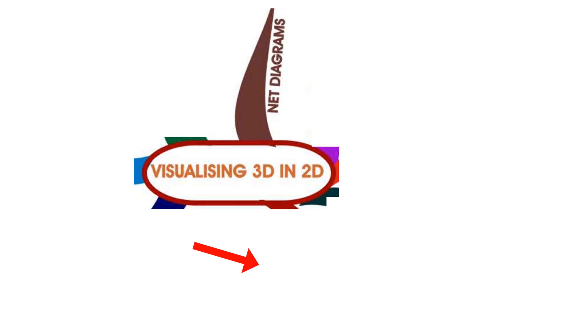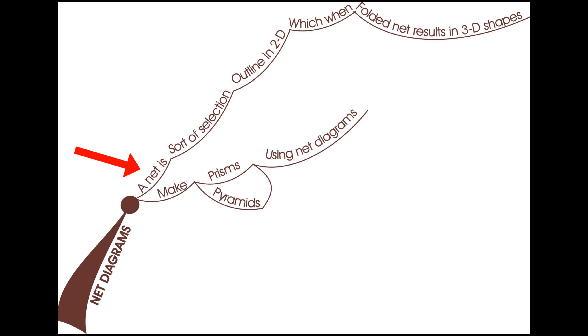Our eighth branch is about net diagrams. A net diagram is a sort of skeleton outlined in 2D which, when folded, results in 3D shapes. We can make prisms and pyramids by using net diagrams.